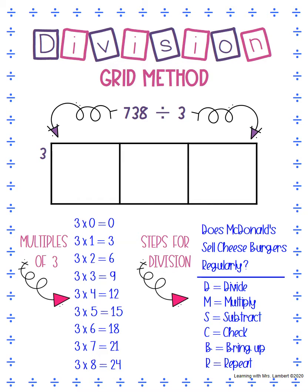Our 3, the smaller number, is gonna go on the outside to the left, and then we're gonna take our 738 and — instead of splitting it up into place value like you would for multiplication — we're just gonna put each digit in its own box on the inside of the box.